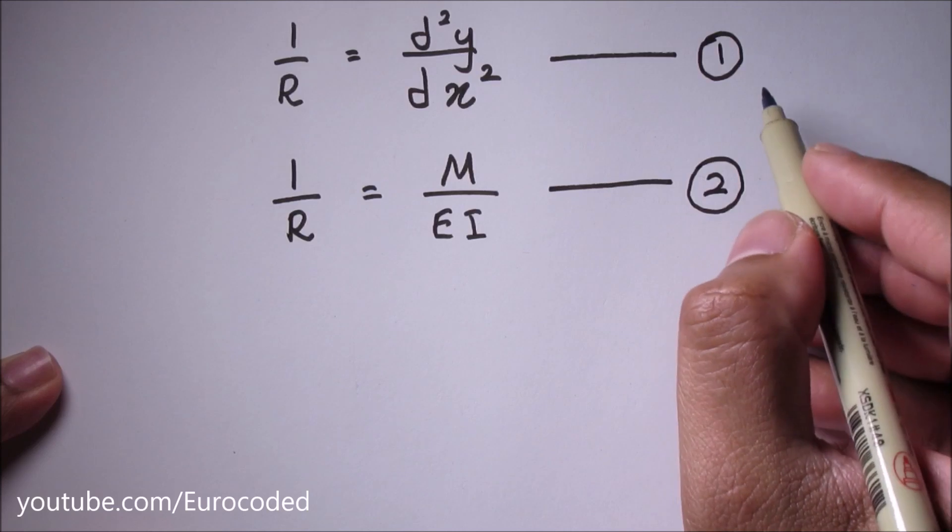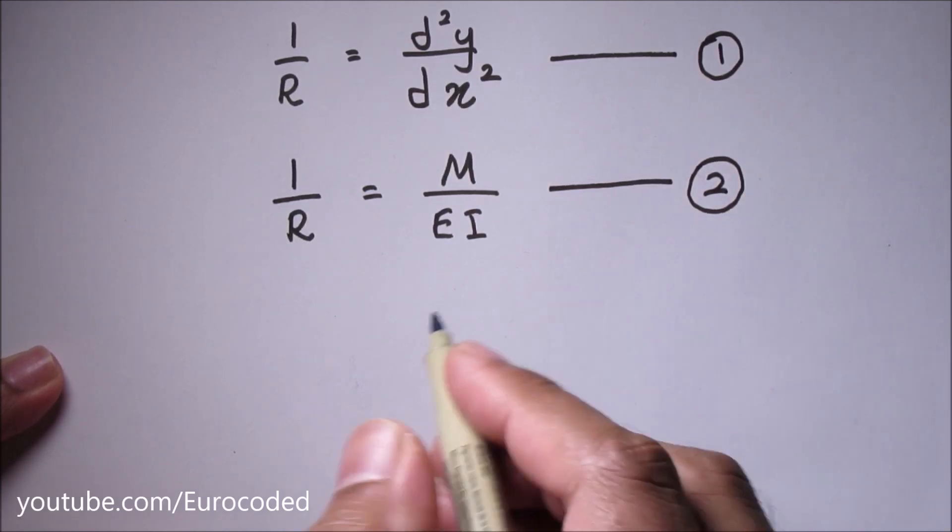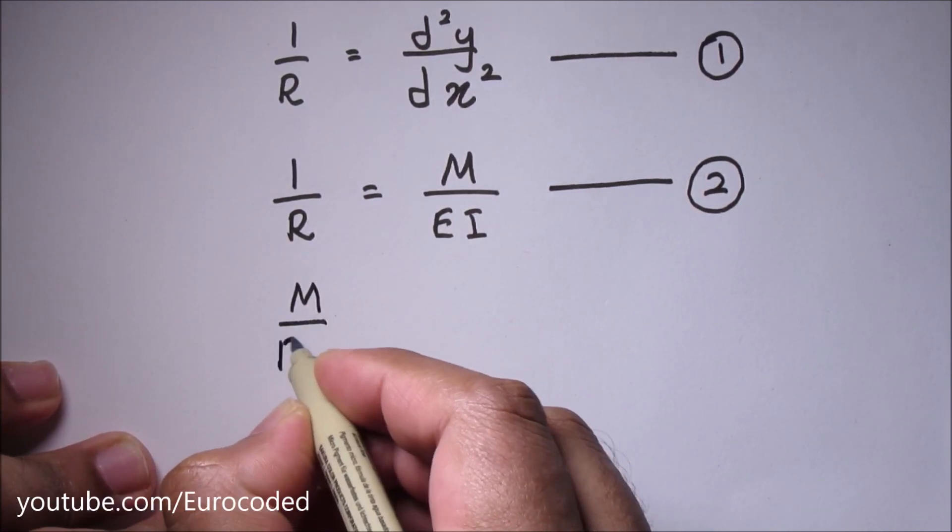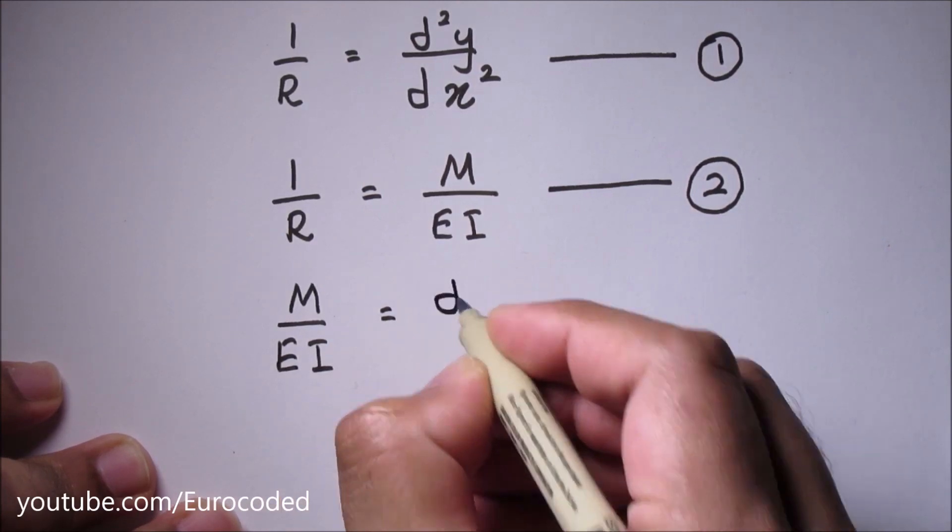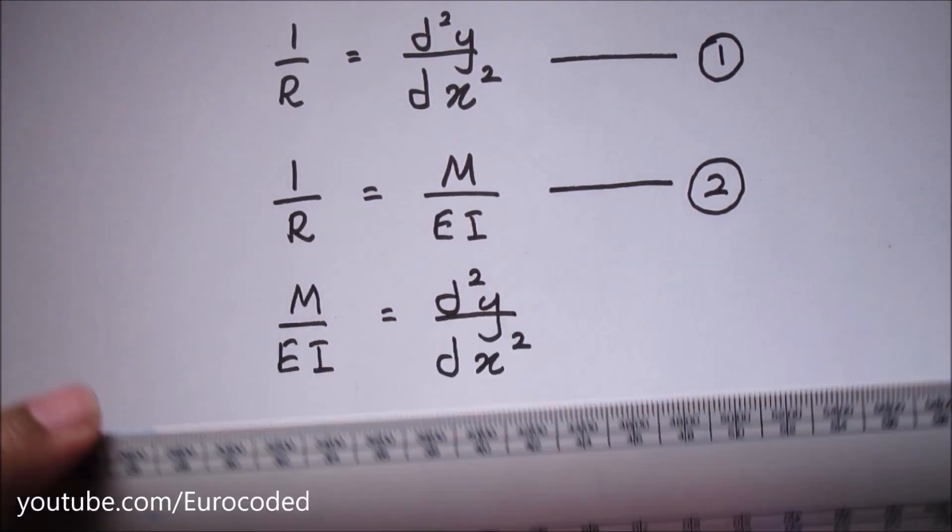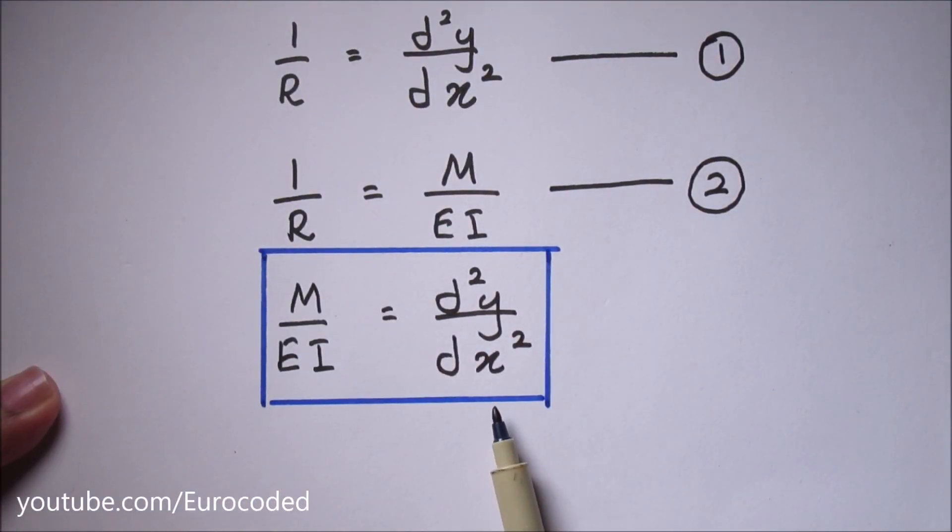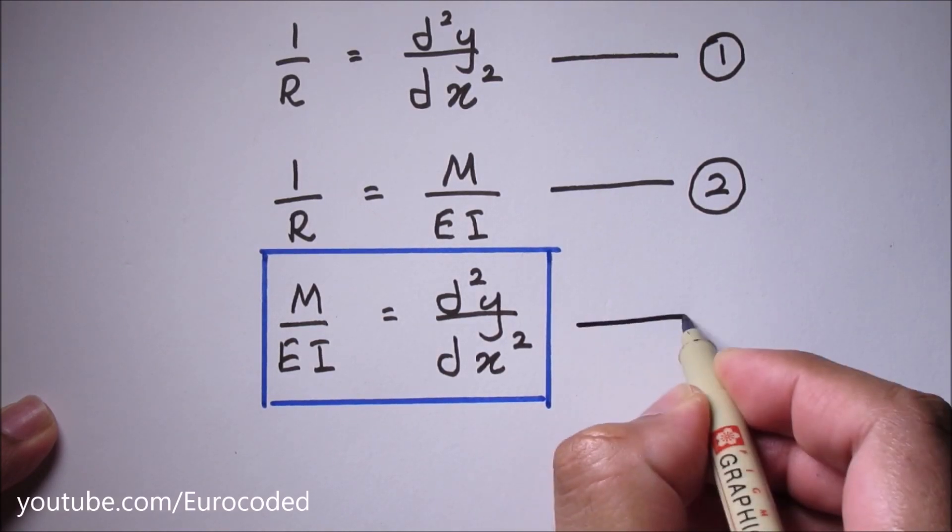It is obvious that equation 1 is equal to equation 2 and therefore we can write M over EI is equal to d squared y over dx squared. This equation is known as the differential equation of the elastic curve and let's call this equation 3.